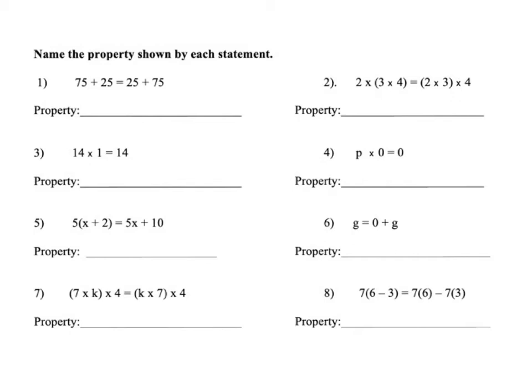And how we're going to do that is we're going to take a look always at the left-hand side of our equal sign and see what changes were made to turn it into the right-hand side. So in number 1, 75 plus 25, what happened over on the right-hand side? What changes were made?